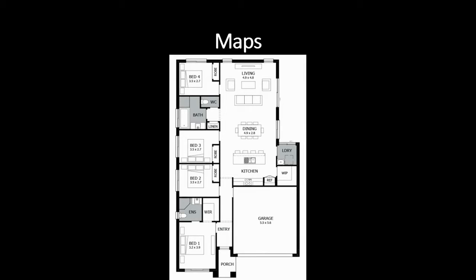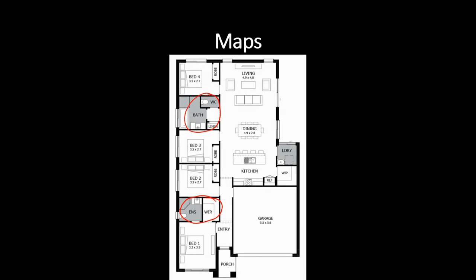This is a map of a house. I wonder how many bedrooms there are in the house — there are four bedrooms. I wonder how many bathrooms there are — there are two bathrooms. Where can you cook your dinner in your house? Maybe you could do it in the kitchen. Where can you watch TV in this house? How about in the living room?